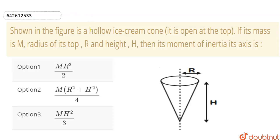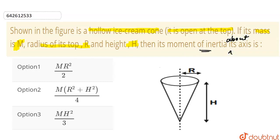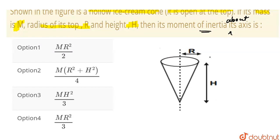In this question, a hollow ice cream cone is given which is open at the top. The mass of this cone is given to be capital M. Radius is capital R and height is capital H. Then we have to find out the moment of inertia about its axis.